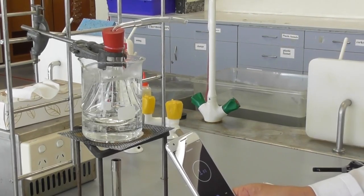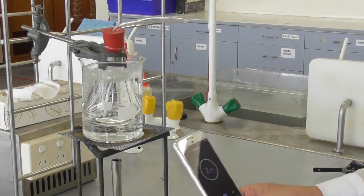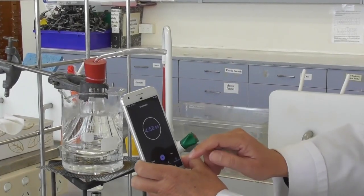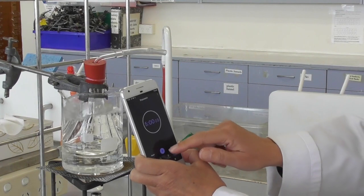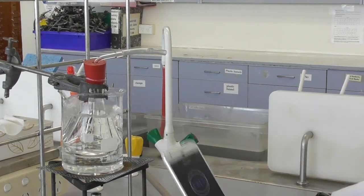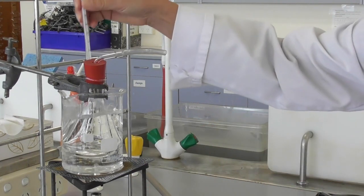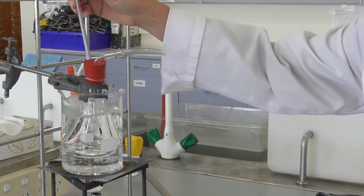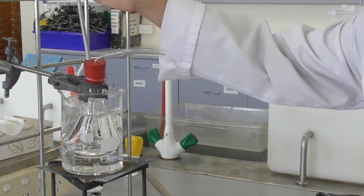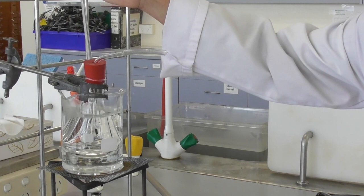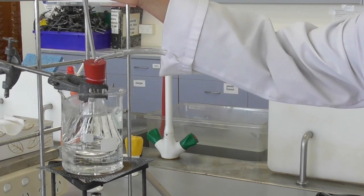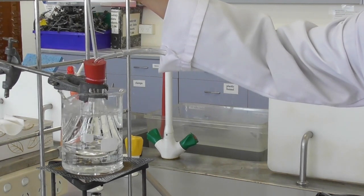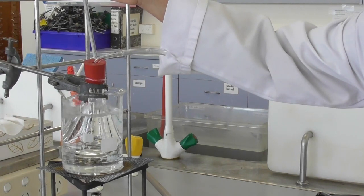Once it's boiling we start the timer. It needs to be boiling for five minutes so that the temperature inside the flask can adjust to the temperature of the boiling water. We take the temperature of the boiling water and then make the assumption that it is the same as the air inside the flask.